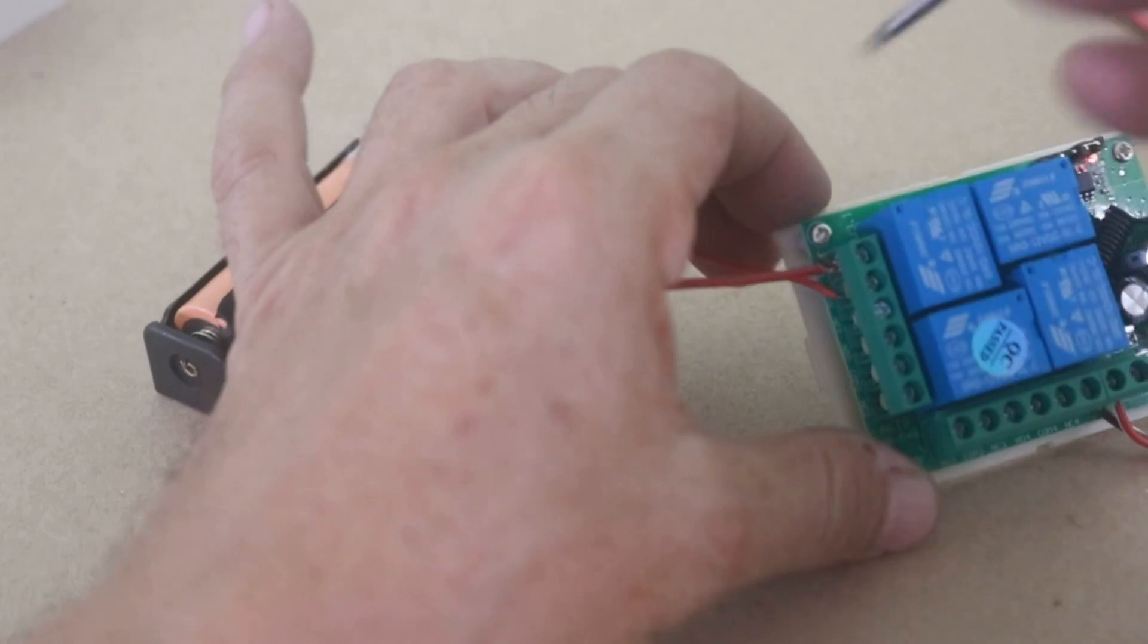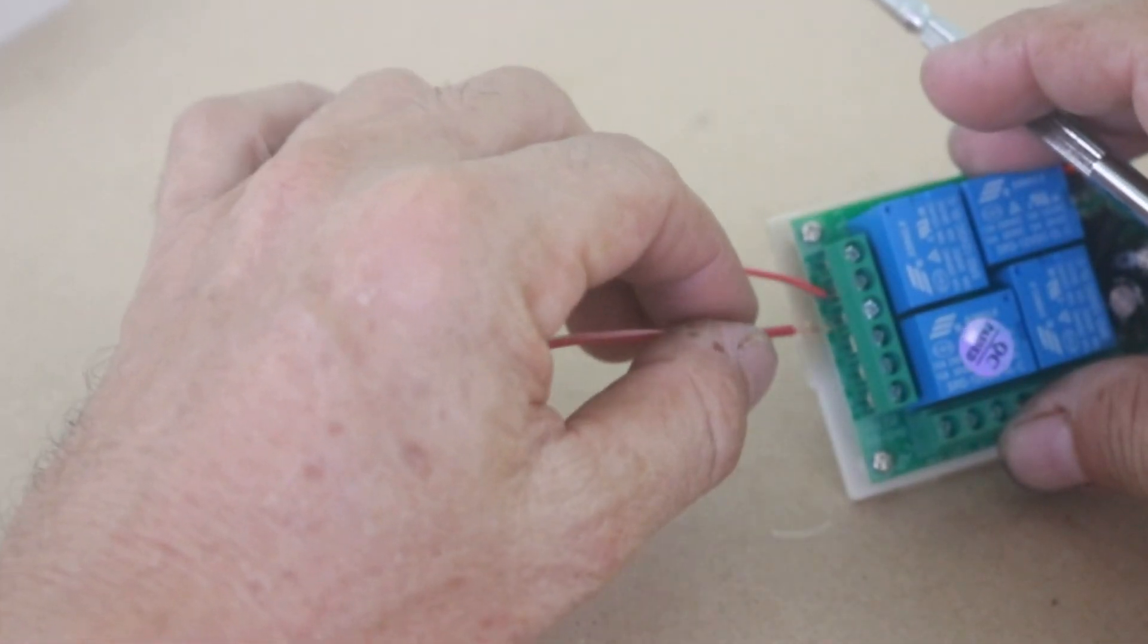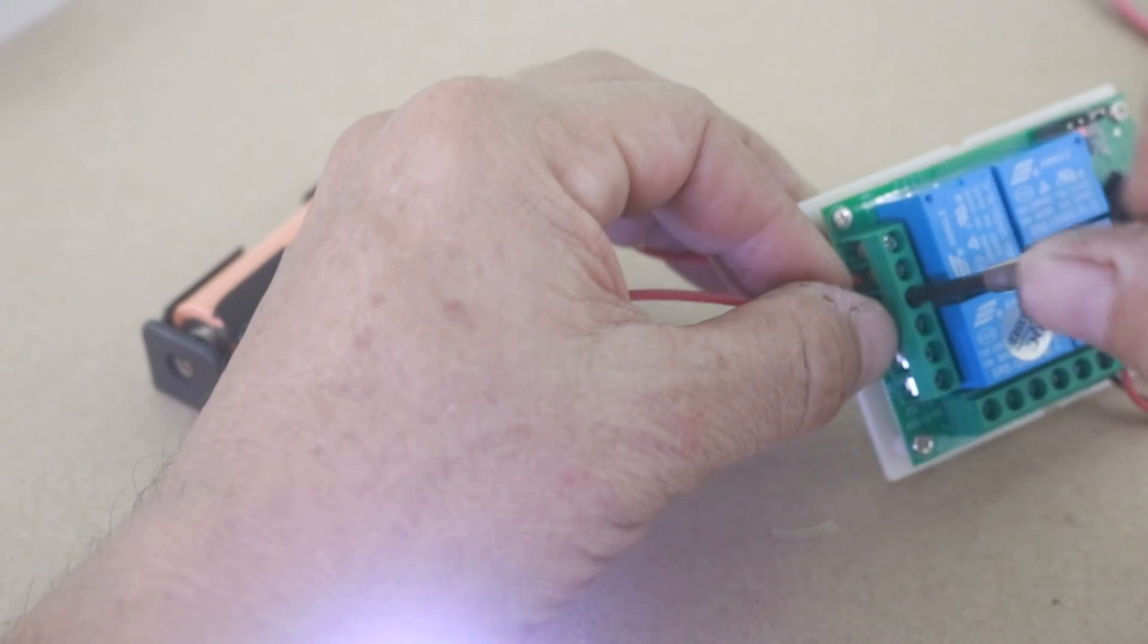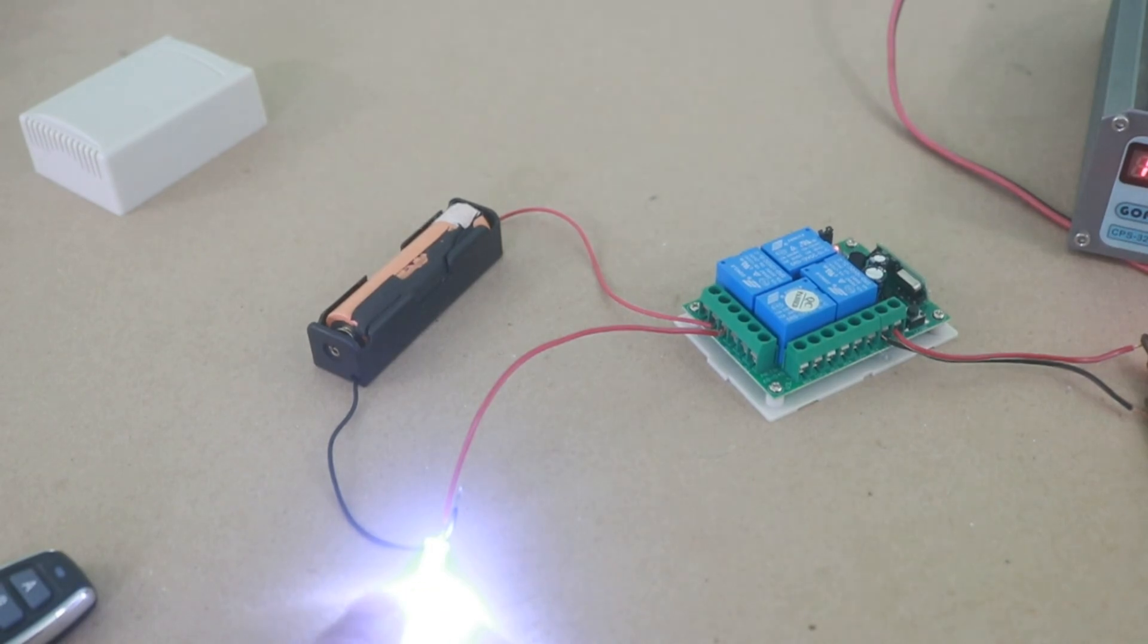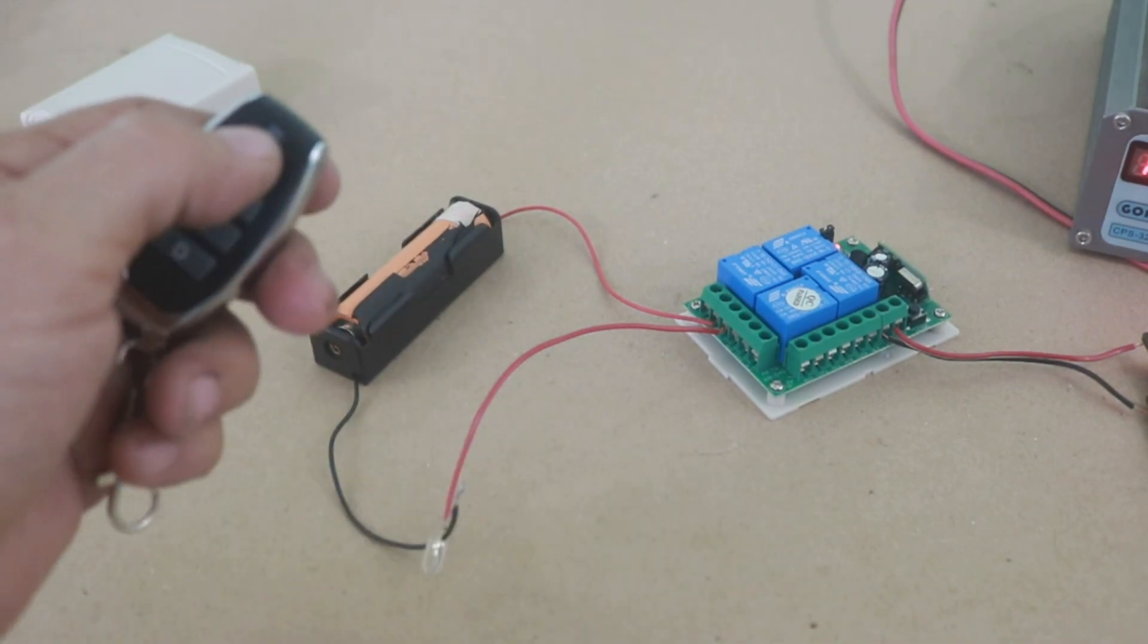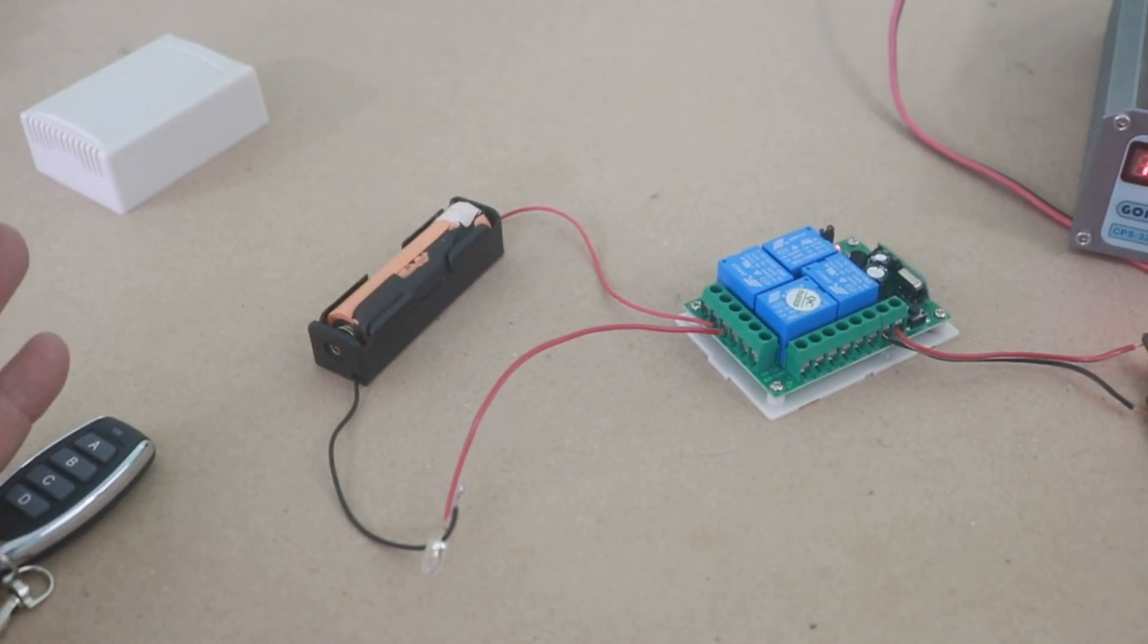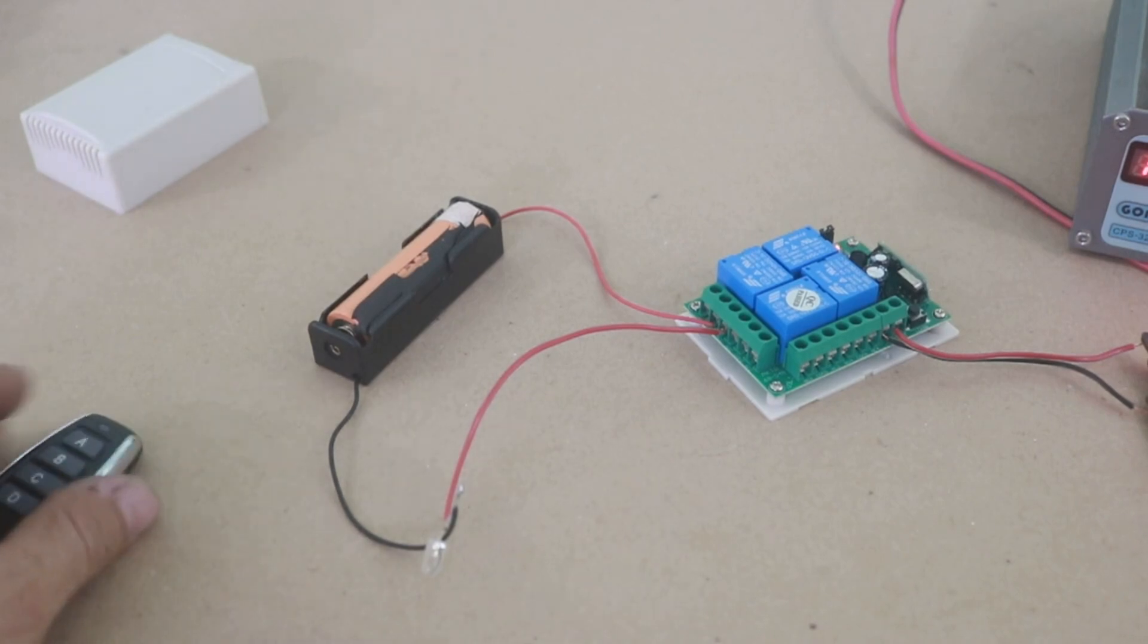Now let me connect the load to the normally closed contact of the relay. So as you can see, the load is always on and when I activate the relay it goes off. You can do the same turn on and off, but for some applications it is good to have control of a normally open and a normally closed contact in the same channel.